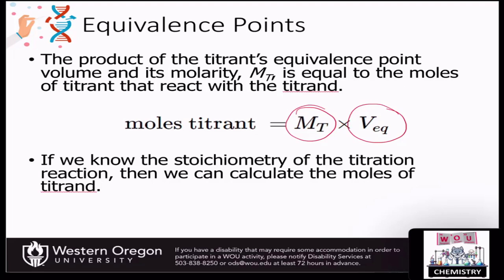Because molarity is moles per liter, if we multiply molarity by the volume in liters, those two units cancel out and we're left with the moles of the titrant. Then if we know the stoichiometry of our reaction — that is, we can write a balanced equation for what's going on — we can calculate the moles of the titrand. We'll come back to this and work through some sample problems in a few minutes.